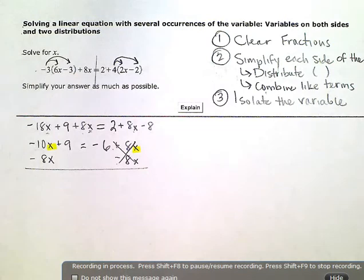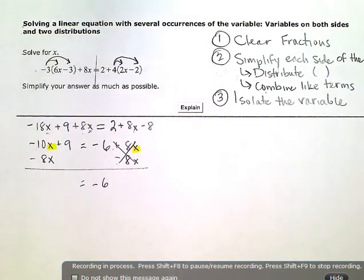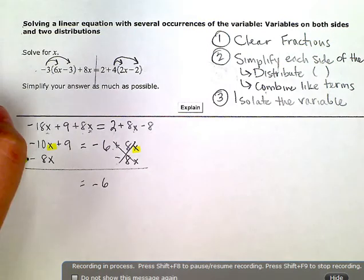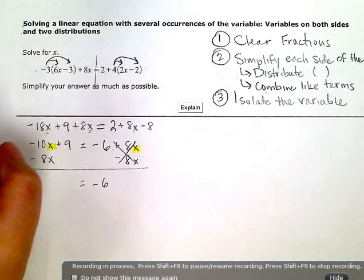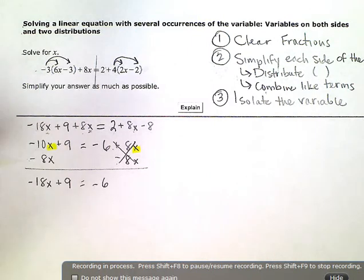I need to do it to both sides to keep my equation balanced. Those two are going to zero out, and on the right I just have a minus six left. On the left, if I have negative 10x minus 8 more x's, that's negative 18x plus nine. Now I only have x's on one side, so I'm making progress.